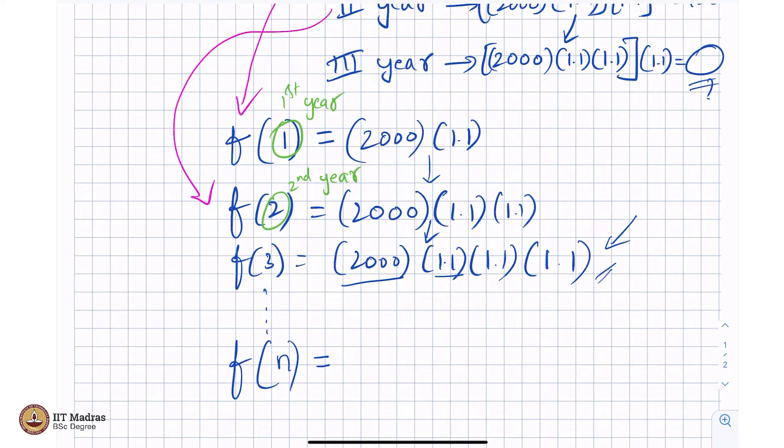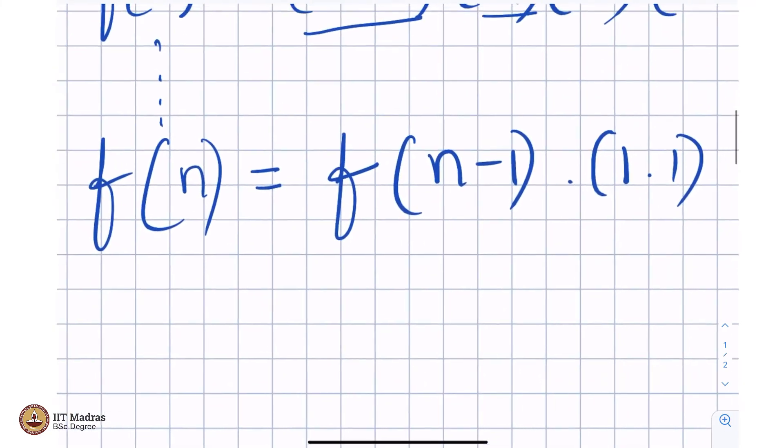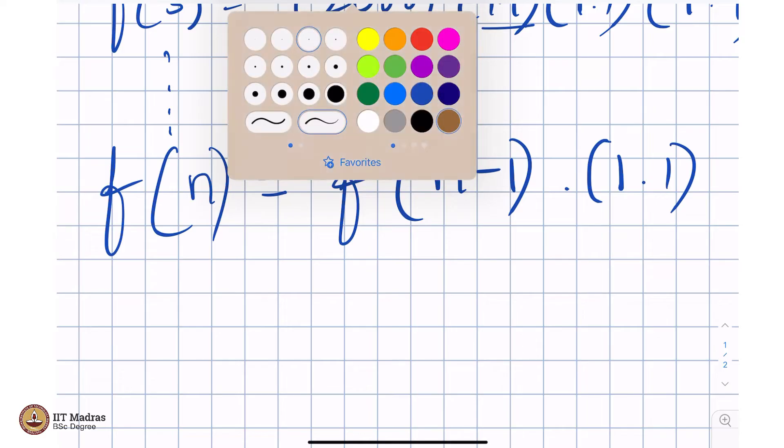I will say whatever you will get at the end of n years is whatever you get at the end of n minus 1 years times 1.1. Pause for a minute, stare at the screen, stare at this properly for a minute.